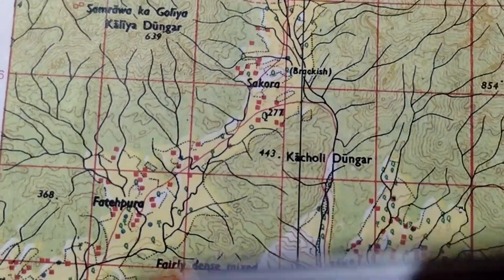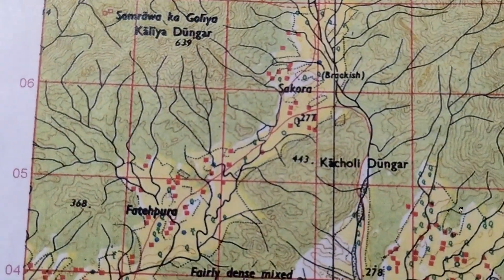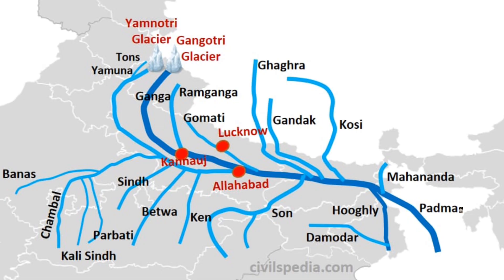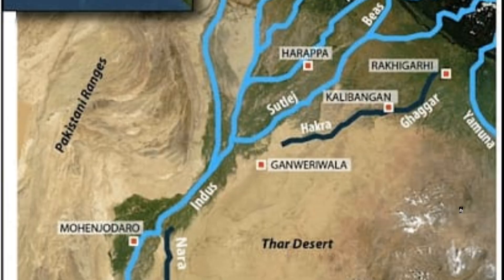The best examples of dendritic drainage patterns are the Amazon River basin, the Ganga River system, and the Indus River system.